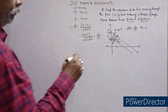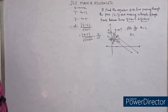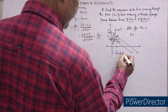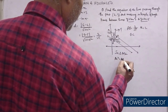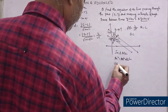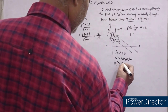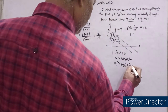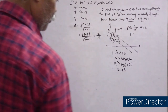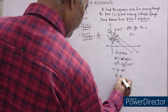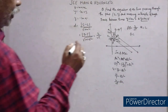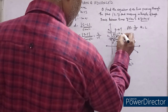Let me find BC using the Pythagoras theorem in triangle ABC. AC² = AB² + BC². So 2² = (2/√5)² + BC². This gives 4 - 4/5 = BC², which is 16/5 = BC². Therefore BC = 4/√5.